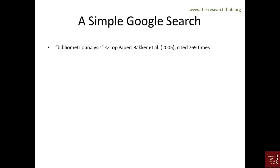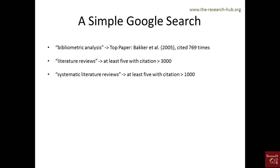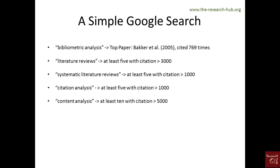I made a simple Google search in Google Scholar with 'bibliometric analysis' and the top cited paper is 769 times cited, published in 2005. Searching with 'literature reviews' I get at least 5 papers with over 3000 citations. With 'systematic literature reviews' I get at least 5 papers with over 1000 citations. With 'citation analysis' about 5 papers with over 1000 citations, and 'content analysis' at least 10 papers with over 5000 citations. All these keywords represent a type and approach of literature review.